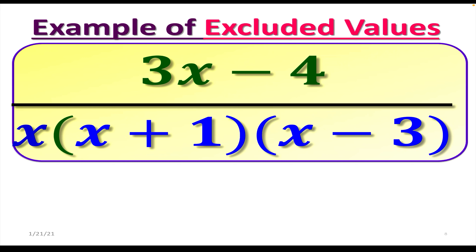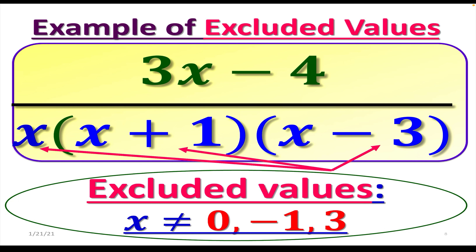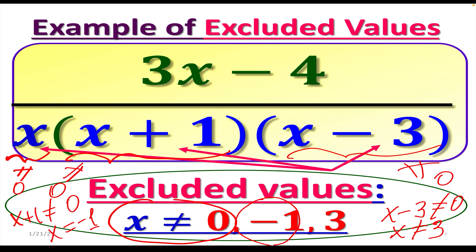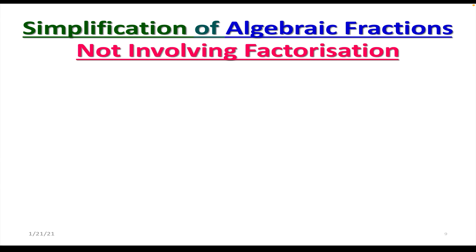Another example: we have (3x − 4) over x(x + 1)(x − 3). Grab the entire denominator and, since we have a product, set each factor not equal to zero. We need to find values of x that make the denominator equal to zero, since division by zero is not permitted. From the first factor: x ≠ 0. From the second factor, x + 1 ≠ 0, so x ≠ −1. From the third factor, x − 3 ≠ 0, so x ≠ 3. If you plug any of these values into the fraction, you get a division by zero problem.